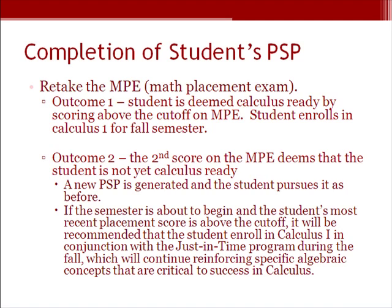Upon completion of the student's personalized study plan, and with the approval of their personal tutor, the student will retake the math placement exam. Upon completion of the math placement exam, two outcomes are possible. The first outcome is that the student receives a score above the cutoff on the math placement exam, and thus the student is deemed calculus ready and will enroll in Calculus I for the fall semester.